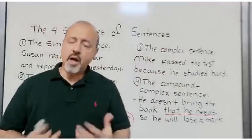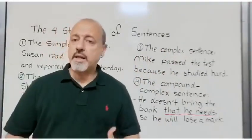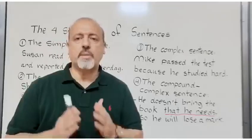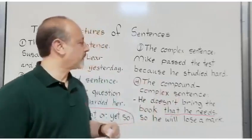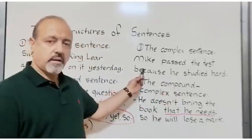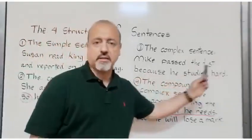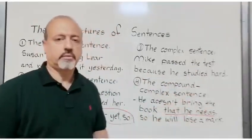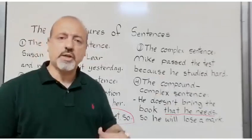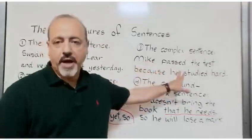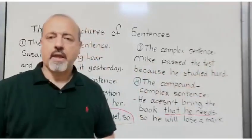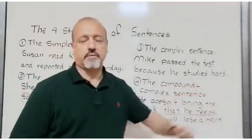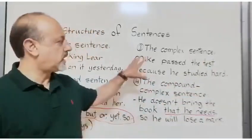The third structure is the complex sentence. The complex sentence consists of one independent clause with at least one subordinate clause. An example: 'Mike passed the test because he studied hard.' The independent clause is 'Mike passed the test' and the subordinate clause is 'because he studied hard.' So this is a complex sentence.